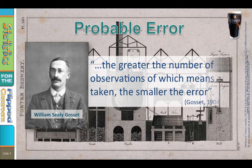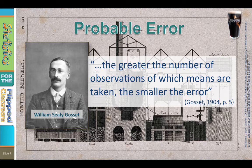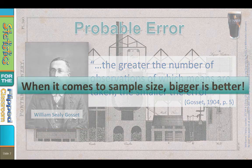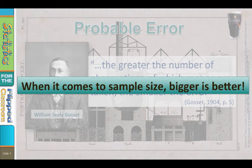Gossett wrote: 'The greater the number of observations of which means are taken' — in other words, the larger the sample size — 'the smaller the error,' referring to standard error. So here is your first takeaway: when it comes to sample size, bigger is better in terms of the precision of our estimate. We know a sample size of 30 gives us minimal error without too many subjects. But what if you do not have the luxury of increasing your sample size? This is where William Seeley Gossett saves the day.